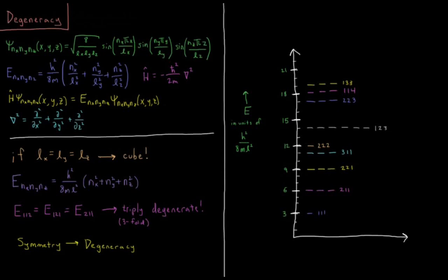This video will look at degeneracy with the example of the three-dimensional particle-in-a-box model system. So our particle-in-a-box wave function in three dimensions from the previous video depends on three quantum numbers: psi, nx, ny, and nz.